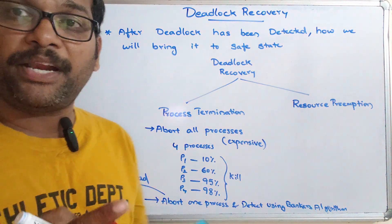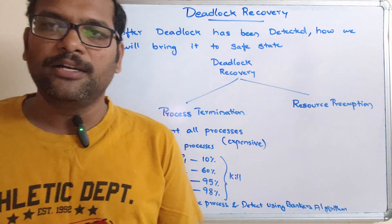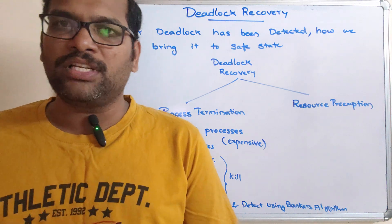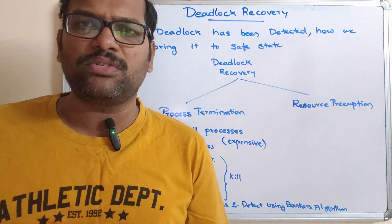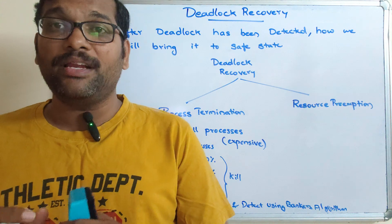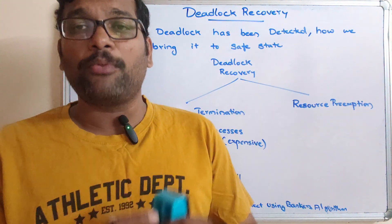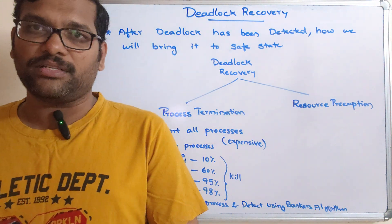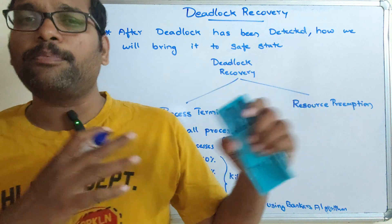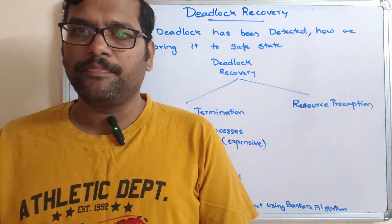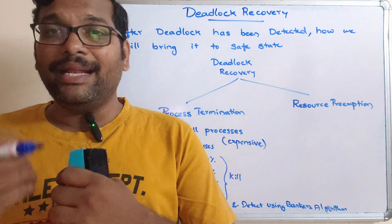The second method of deadlock recovery is resource preemption. Preemption means forcibly deallocating resources from one process and allocating those same resources to another process that requires them, letting that other process complete its execution so that the deadlock can be recovered.